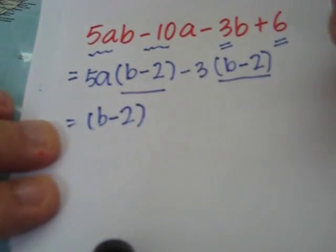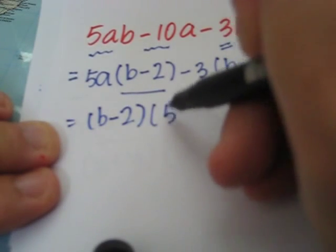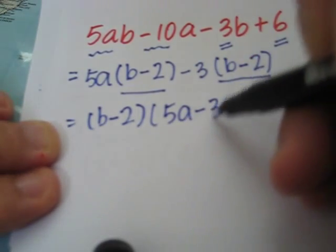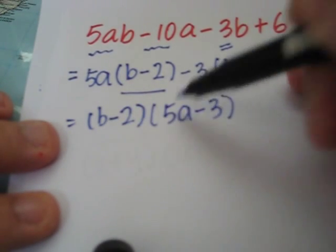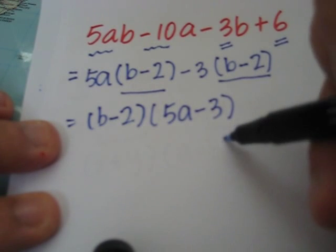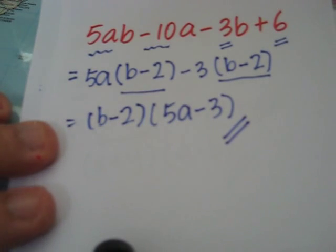Here's the common factor, b minus 2. And what's left is this. So, since there isn't any common factors within the brackets, this is the completely factorized form.